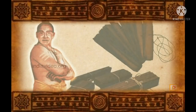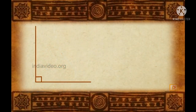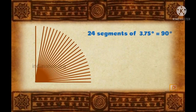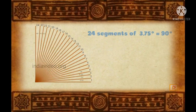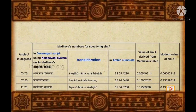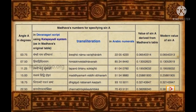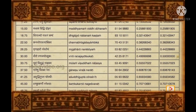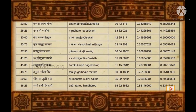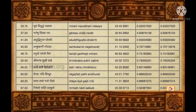A more involved example is the 4th century mathematician Madhava's use of Katapayadi to encode the values of trigonometric sine functions from 0 to 90 degrees in multiples of 3.75 degrees. In this table, the sine value of each angle appears as a short Katapayadi phrase. The table of values can be easily reconstructed by remembering these phrases in the right order.